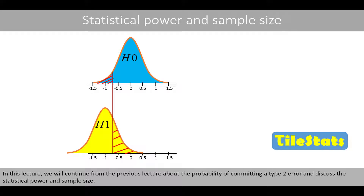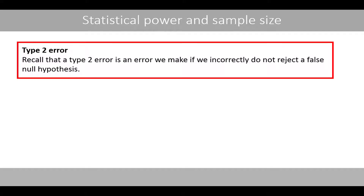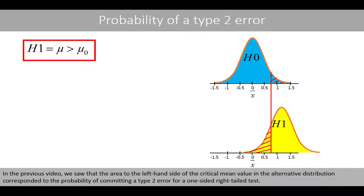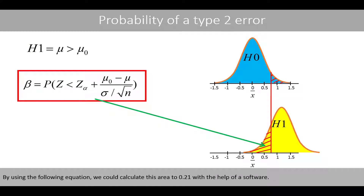In this lecture, we will continue from the previous lecture about the probability of committing a type 2 error and discuss how we can calculate the statistical power and sample size. Recall that the type 2 error is an error we make if we incorrectly do not reject a false null hypothesis. In a previous video, we saw that the area to the left-hand side of the critical mean value in the alternative distribution corresponded to the probability of committing a type 2 error for a one-sided right-tailed test. By using the following equation, we could calculate this area to 0.21 with the help of the software.